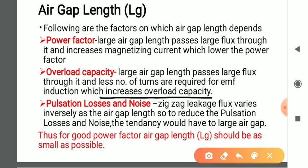The third factor affected by the air gap length is pulsation loss and noise. If the air gap length increases, the amount of scattered flux increases. The scattered flux is also known as zigzag leakage flux, and this zigzag leakage flux normally varies inversely with the air gap length. It means if the air gap length increases, the amount of zigzag leakage flux decreases. So in order to reduce pulsation losses, we need to maintain a large air gap.